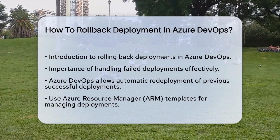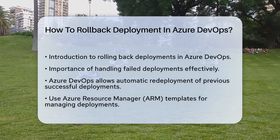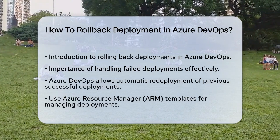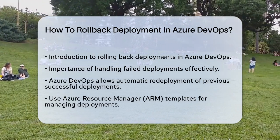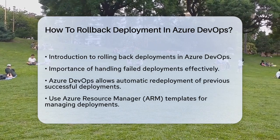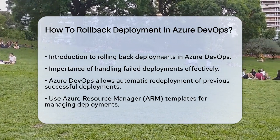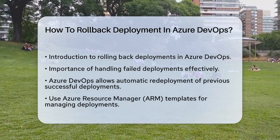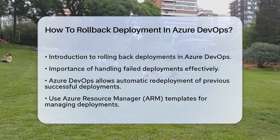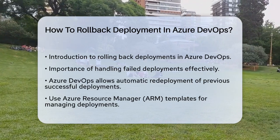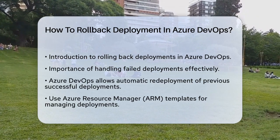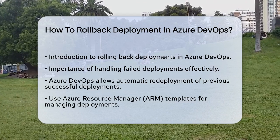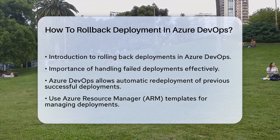First, it's important to understand that Azure DevOps provides several ways to handle failed deployments. One of the most useful features is the ability to automatically redeploy a previous successful deployment. To start, you can use Azure Resource Manager (ARM) templates to manage your deployments. If a deployment fails, you can use the rollback-on-error parameter to redeploy the last successful deployment.